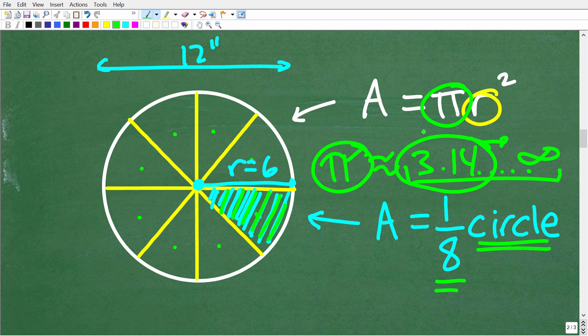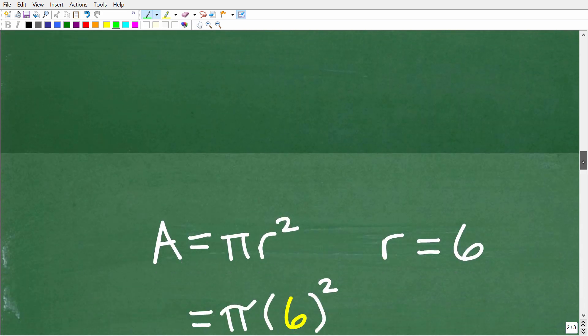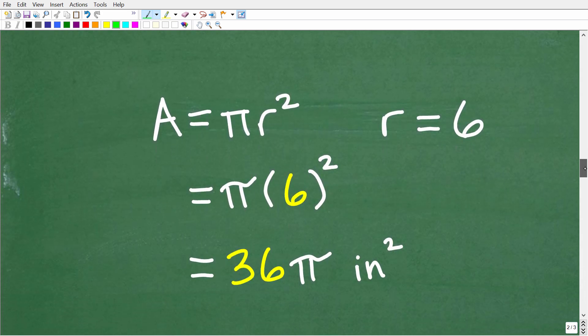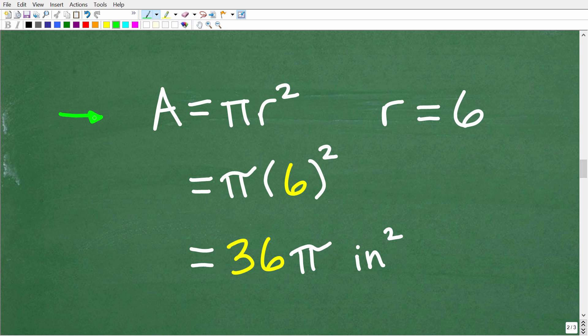Let's calculate the area of this entire circle and then we'll figure out one eighth of it in just one second. So the area of the entire circle is going to be pi r squared. Again r is the radius which is six inches. So let's do this number crunching right now. Here is the area or the formula for the area of a circle. That's pi r squared. Our radius is six inches. So we're going to plug in six for this r right here.